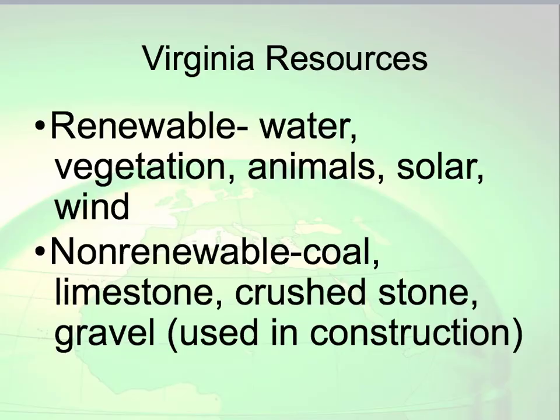Resources that can be found in Virginia include renewable resources such as hydroelectric, vegetation like wood and plants, animals, solar, and wind. Non-renewable resources in Virginia include coal — which is a big one found on the other side of the state — limestone, crushed stone, and gravel.